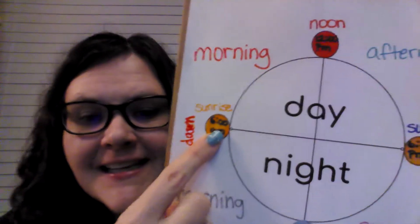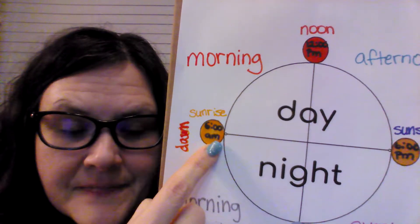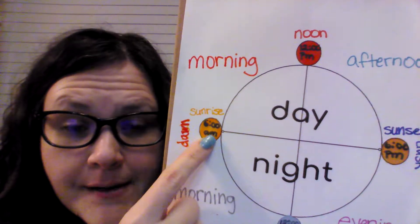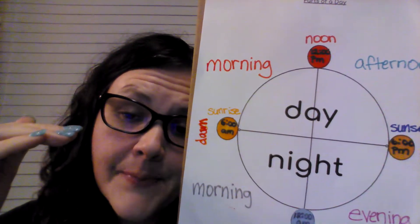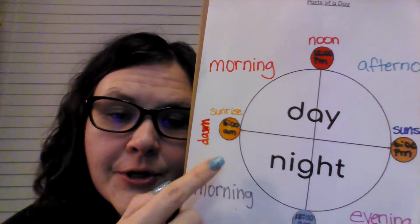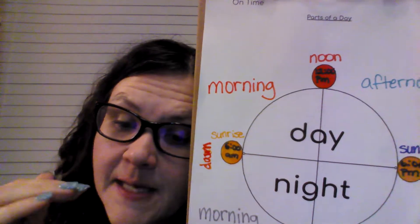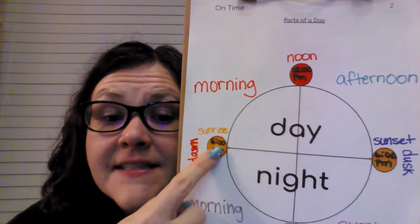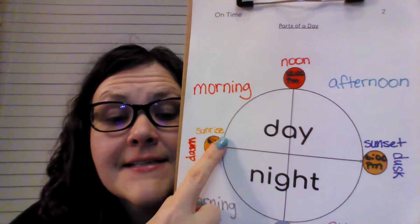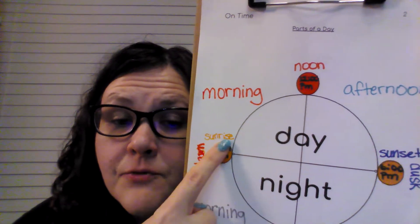We're going to start right here with 6 a.m. That is dawn. So in the morning, before the sun comes up, and as the sun comes up, we call that time dawn. When the sun comes up and you can see the sun, we say sunrise. So we have dawn, sunrise.